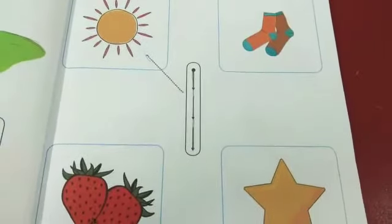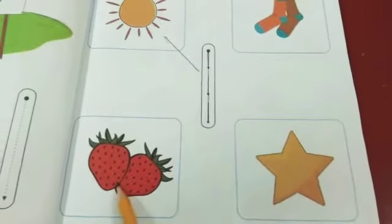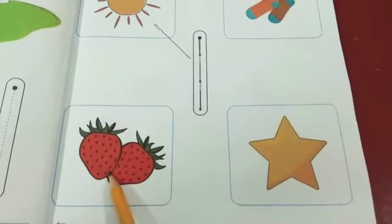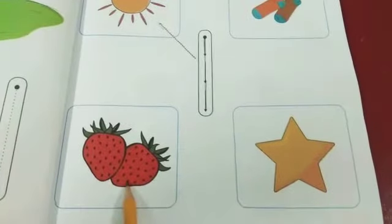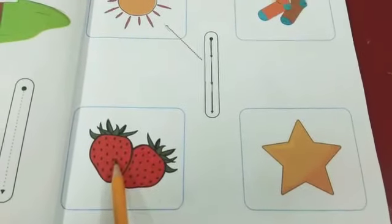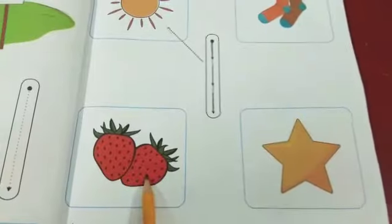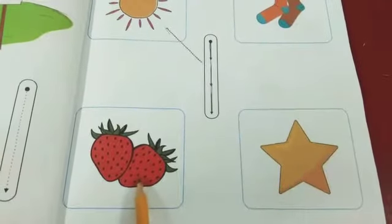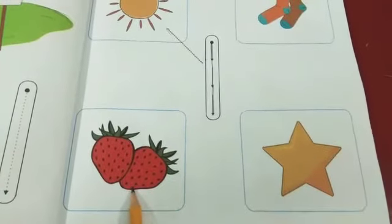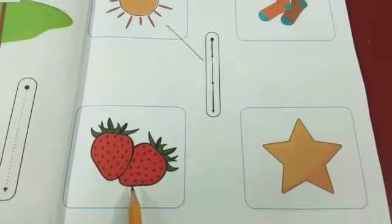What are these? These are strawberries. How many strawberries are these? Let's count. One, two. Two strawberries. We will match this? We will not match these strawberries.